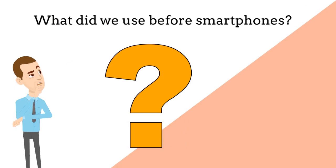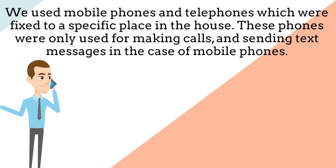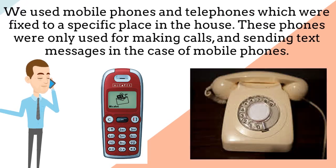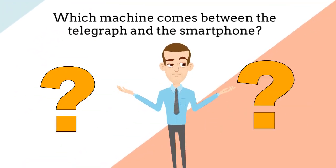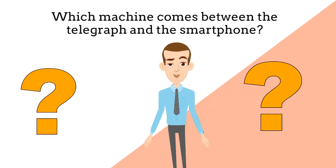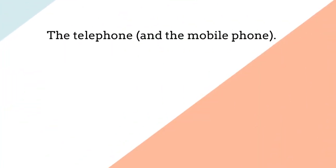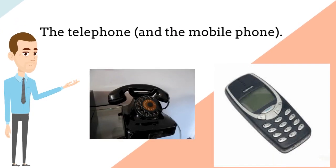What did we use before smartphones? We used mobile phones and telephones which were fixed to a specific place in the house. These phones were only used for making calls and sending text messages in the case of mobile phones. The telephone and mobile phones come between the telegraph and the smartphone.